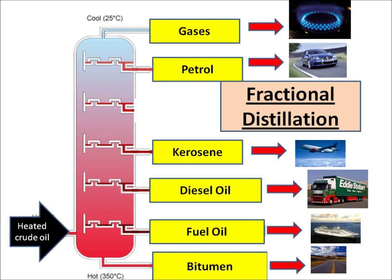The shortest chain molecules, with the lowest boiling point, go to the top and become gases. The ones with the longest chain molecules go to the bottom because they've got high boiling points, and they become bitumen. You need to know the uses of each of the six fractions: gases are used for cooking, petrol is used as a fuel for cars, kerosene is used as a fuel for planes, diesel is used as a fuel for lorries and cars, fuel oil is used as a fuel for ships, and bitumen is used on roads.